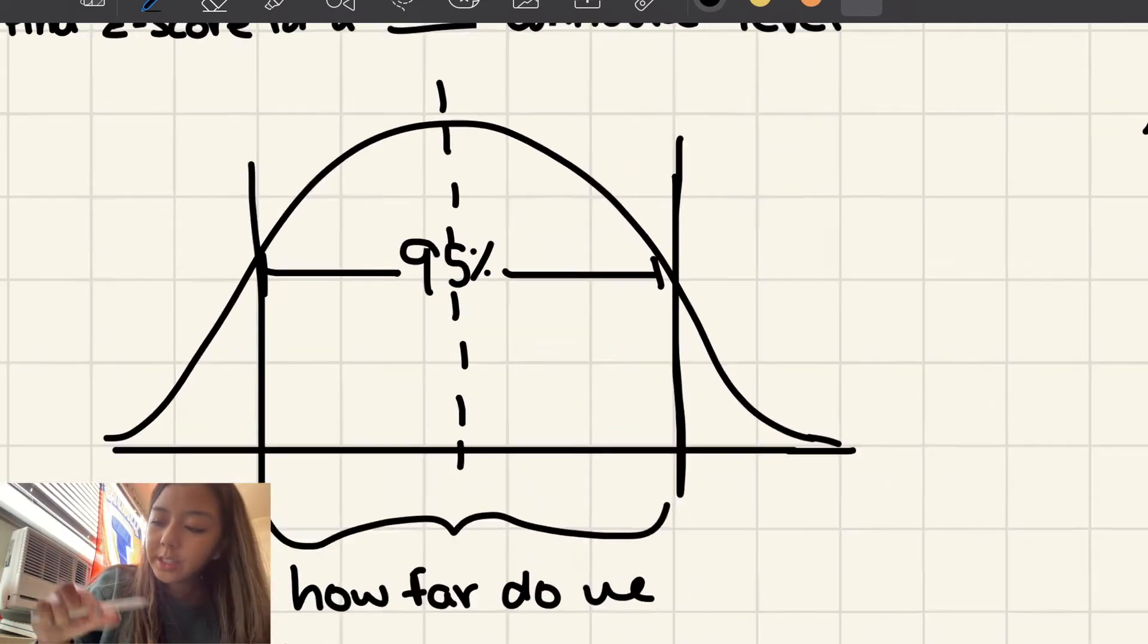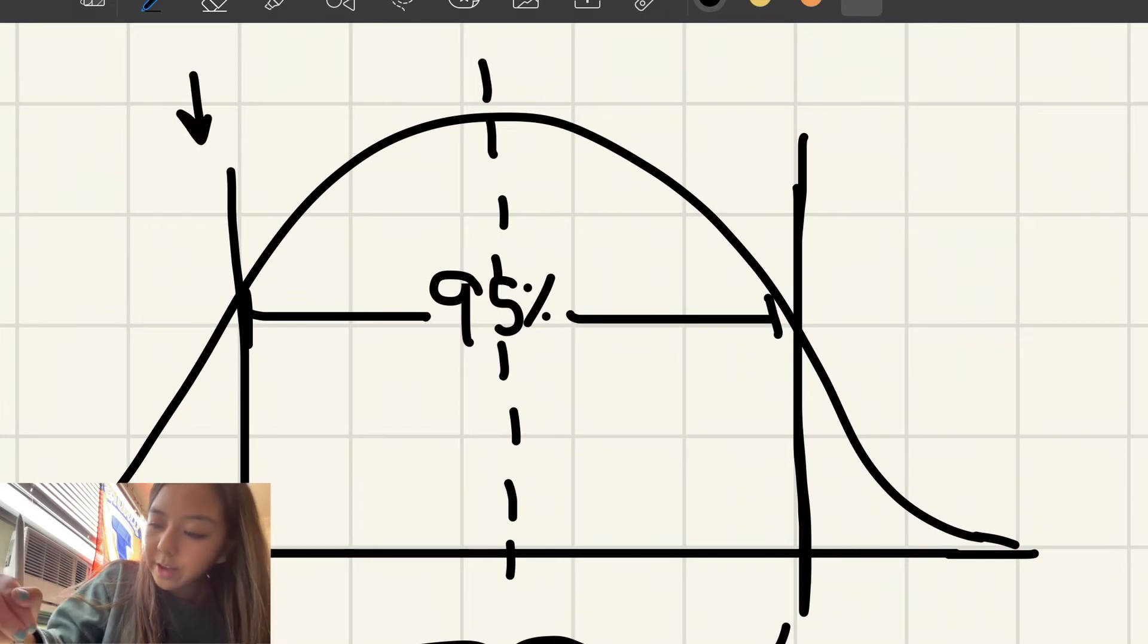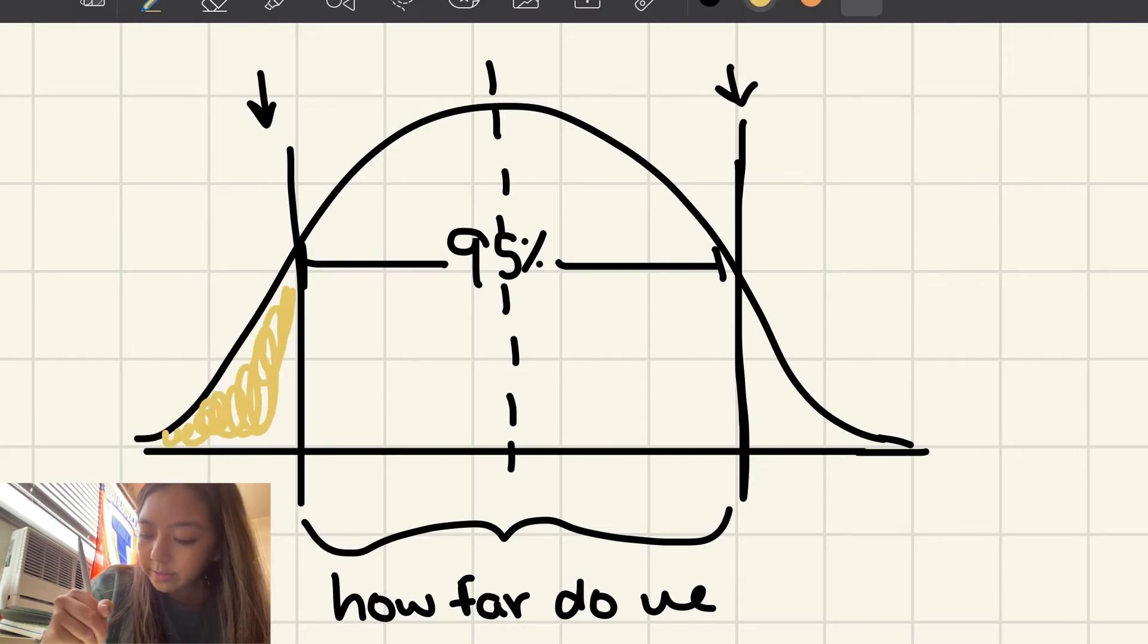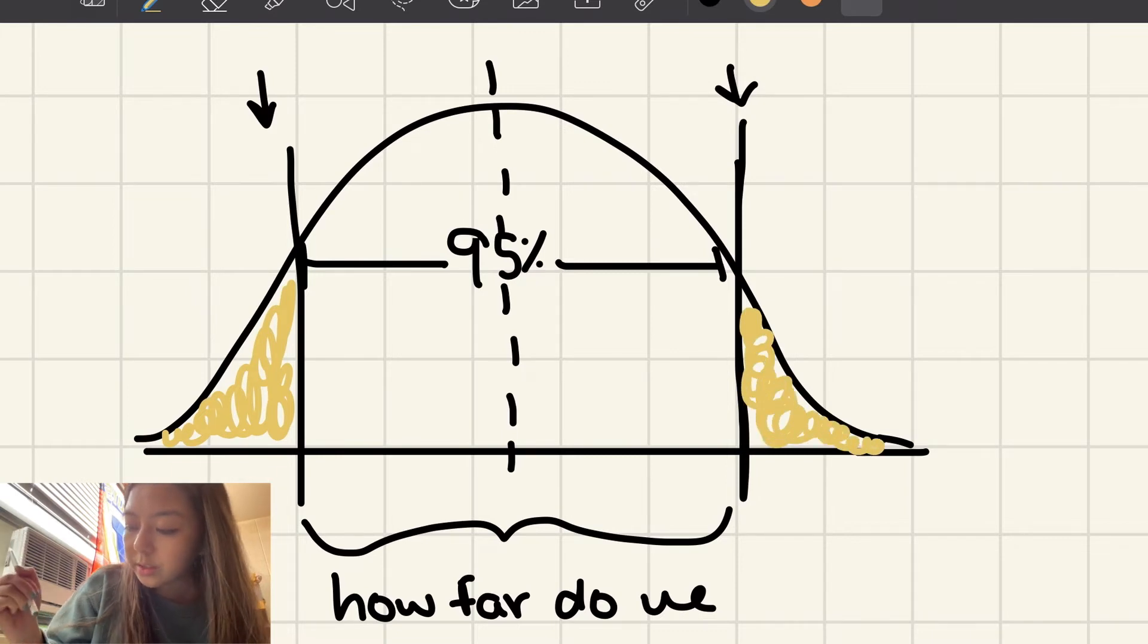So what we're looking for here is the z-scores where 95% of the normal curve lies in between. And notice that the tails here are uncounted for in the 95%, but they're still important. They're going to be really important and crucial here.